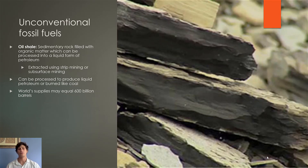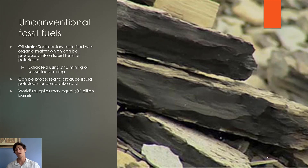The next unconventional fossil fuel is oil shale — sedimentary rock filled with organic matter which can be processed into a liquid form of petroleum called shale oil. It is extracted primarily through strip mining or subsurface mining, very similar to coal, and can be broken down and processed into shale oil.